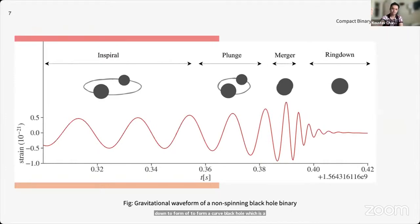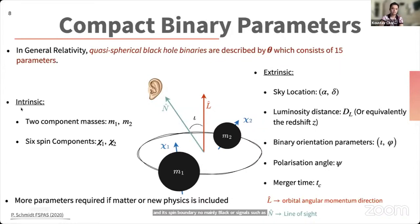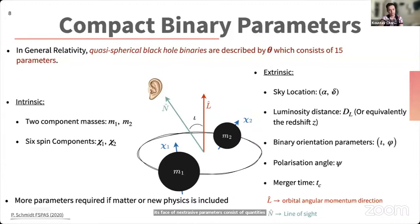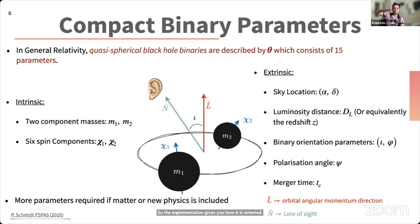This excited black hole then rings down to form a Kerr black hole, which is completely characterized by its component masses and spin value. Binary black hole signals are characterized by a set of 15 different parameters, broadly categorized into intrinsic and extrinsic parameters. The intrinsic parameters include the component masses m₁ and m₂ and the two spin vectors χ₁ and χ₂, which together determine the signal waveform morphology. The extrinsic parameters include the sky location (right ascension and declination), luminosity distance d_L, binary orientation (inclination and azimuth), and polarization angle.